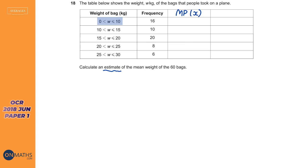To find the midpoint, just find the halfway number. If you're unsure, add the two limits and divide by 2. So 0 + 10 = 10, divided by 2 = 5. Next: 10 + 15 = 25, divided by 2 = 12.5. Then 15 + 20 divided by 2 = 17.5. Halfway between the next group is 22.5, and the last is 27.5. The groups aren't even-width but you handle them the same way.